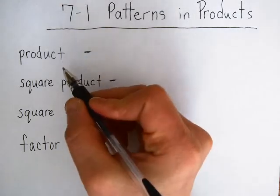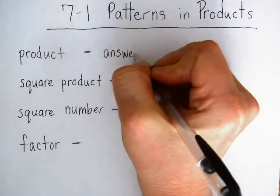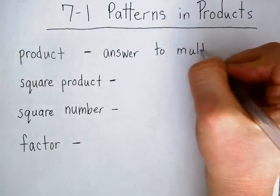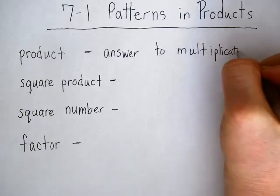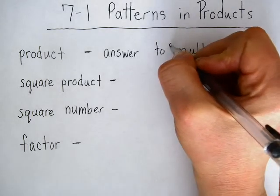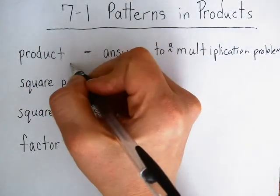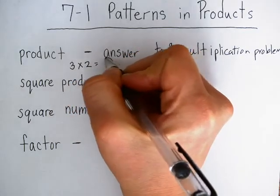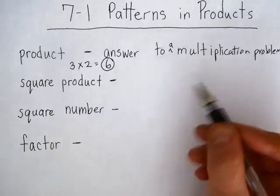The first vocabulary word is product, and a product is an answer to a multiplication problem. An example of a product might be 3 times 2 equals 6 — 6 would be the product, because it's the answer.